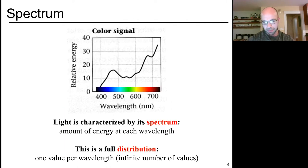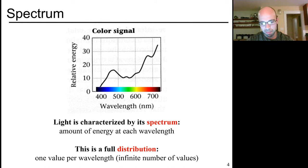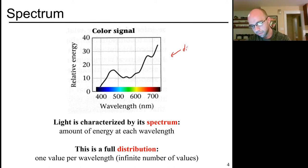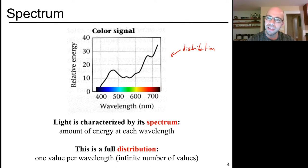When we talk about light from an extremely rough perspective, we're talking about its spectrum. At least abstractly, we can think of the spectrum of light as a plot where light is a composition of many different wavelengths. Very rarely do we see a light source that's one pure wavelength isolated among all others. Instead, we think of light as a distribution over different wavelengths — for every single wavelength, we get some relative energy value telling you how much of that wavelength is present in a particular light source.